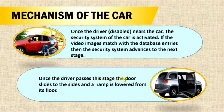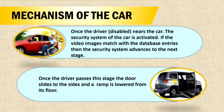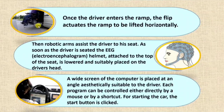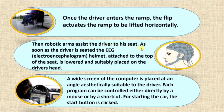Once the driver passes the security stage, the door slides to the sides and a ramp is lowered from the floor — since this person is disabled or uses a wheelchair. Once the driver enters onto the ramp, a flip activates the ramp to be lifted horizontally, bringing the person inside the car where robotic arms assist the driver to their seat.